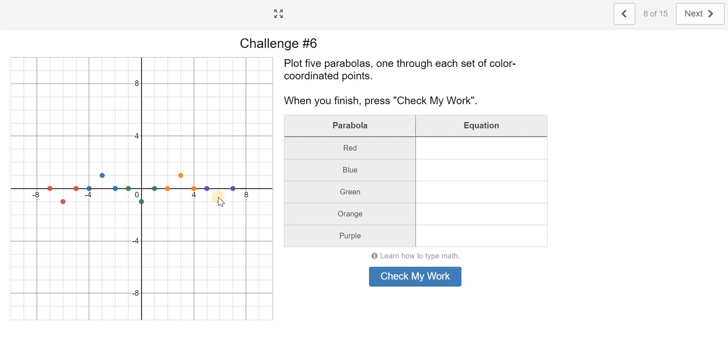Now, I look at each set of these colored things. I noticed that they all have the same step pattern, 1 over, 1 up. Orange, 1 over, 1 down. Green, 1 over, 1 down. Sorry, 1 up, 1 over, 1 down, 1 over, 1 up. So my a value for all of these is going to be 1. Just some of them open up and some of them open down. So I need to get a parabola that matches with that.